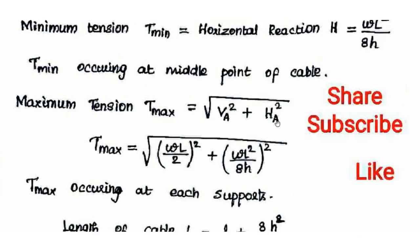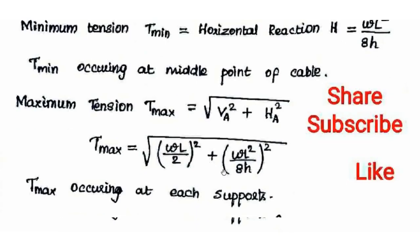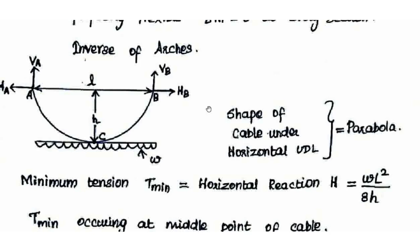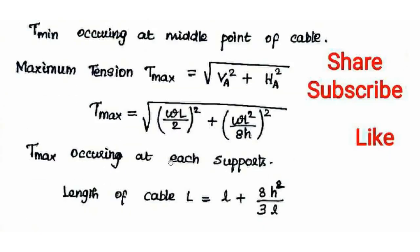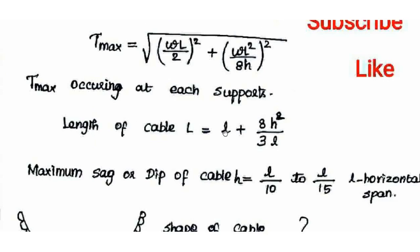Maximum tension equals the square root of VA² plus HA², which is the same as VB² plus HB². Maximum tension is acquired at each support — at both support A and support B. The length of cable is L equals L plus (8/3) × H² divided by L, where H is the maximum sag or dip of the cable.